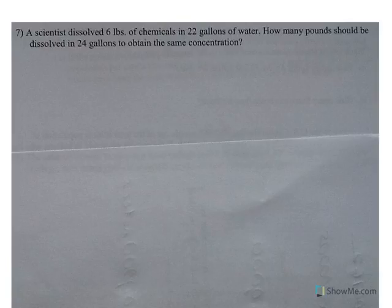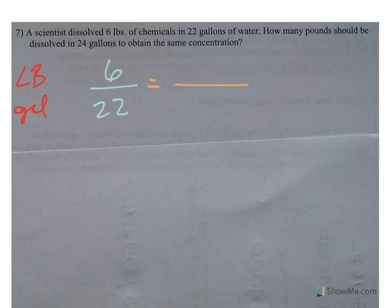Let's get to some story problems. Number 7, a scientist dissolved 6 pounds of chemicals in 22 gallons of water. I'm talking about pounds to gallons. So 6 pounds, 22 gallons of water. How many pounds should be dissolved in 24 gallons of water to obtain the same concentration? That means it's proportional.